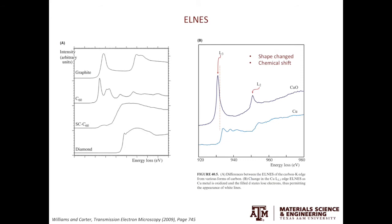You have seen the example on the left from one of the previous videos. The EELS spectrum from graphite is different from the one from diamond. In diamond, the chemical bonding is sp3 hybridization; in graphite it is sp2 hybridization. Different bonding types cause different density of states above the Fermi level, which in turn leads to differences in the EELS spectra.